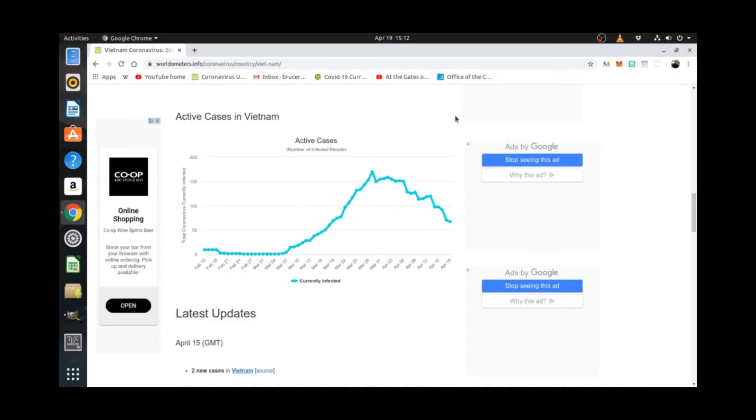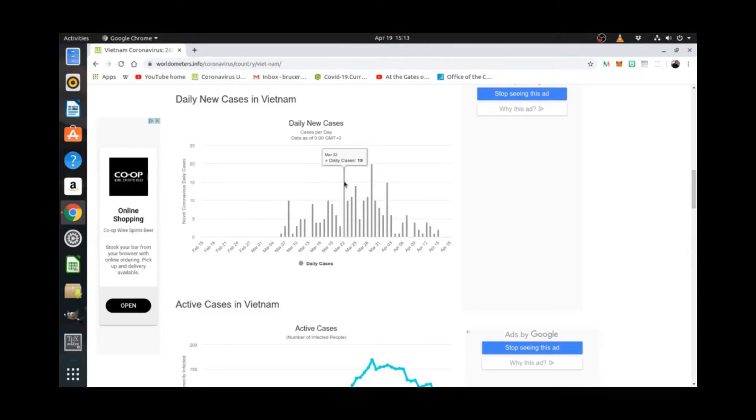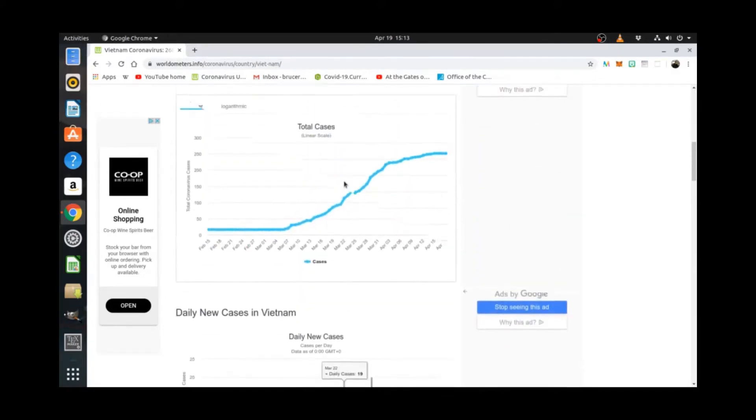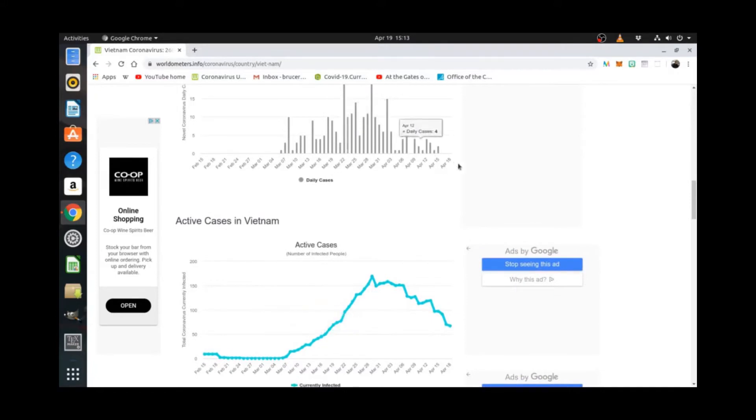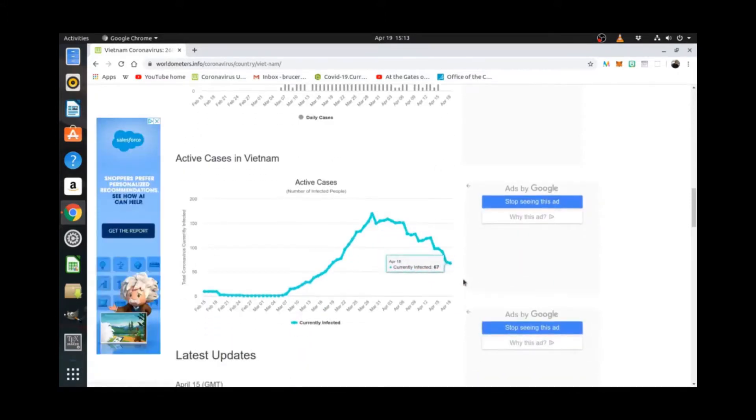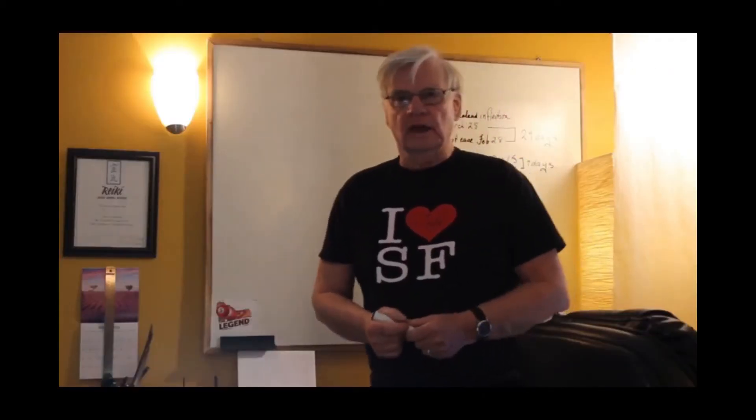This is the active cases graph for Vietnam, which we see is very definitely over the hump. We see perhaps an inflection point about here. It looks like it would correspond to this particular peak here. And these are the total cases, which is this typical S-curve as they're beginning to near the end of this. Again, there may be a long tail on it, so we need to wait until this graph has actually hit the bottom and then wait two weeks afterwards.